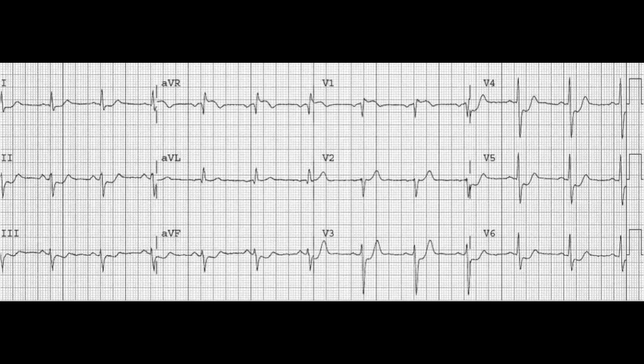If you look at lead 1, 2, 3, AVF, V3, V4, V5, and V6, we see ST depression. So elevation in AVR with fairly consistent ST depression across our inferior and precordial leads could be indicative of a left main coronary artery occlusion.